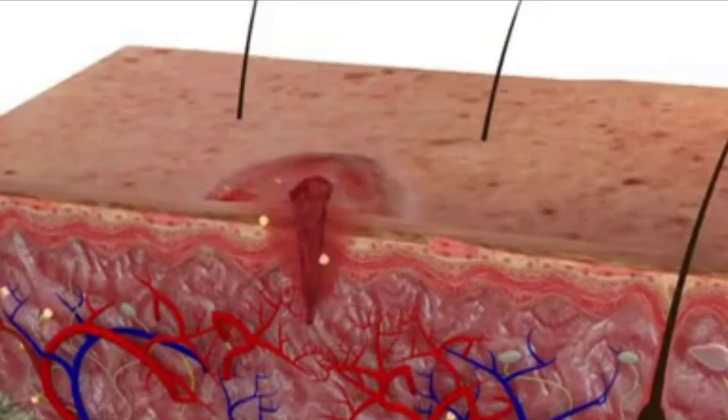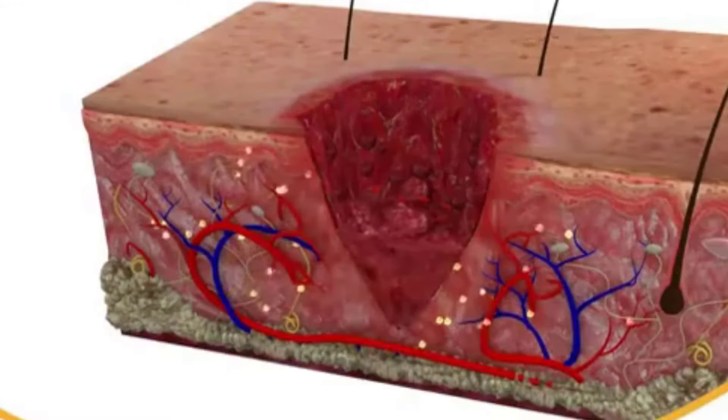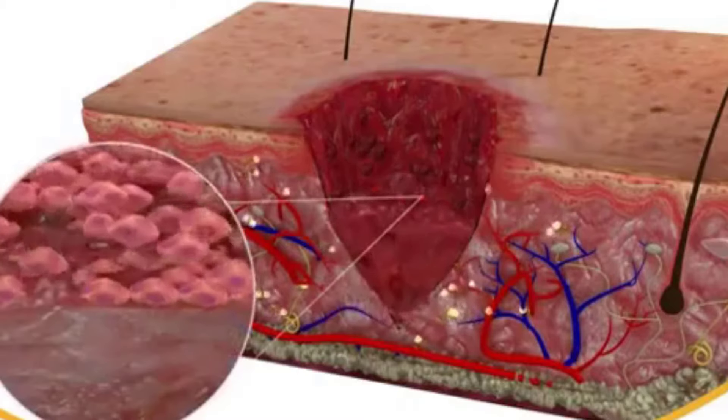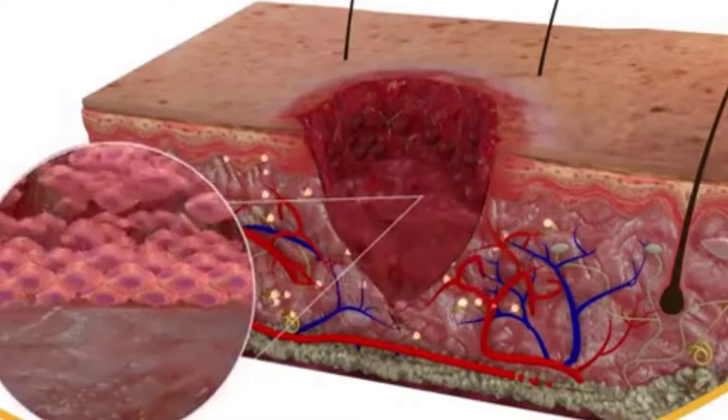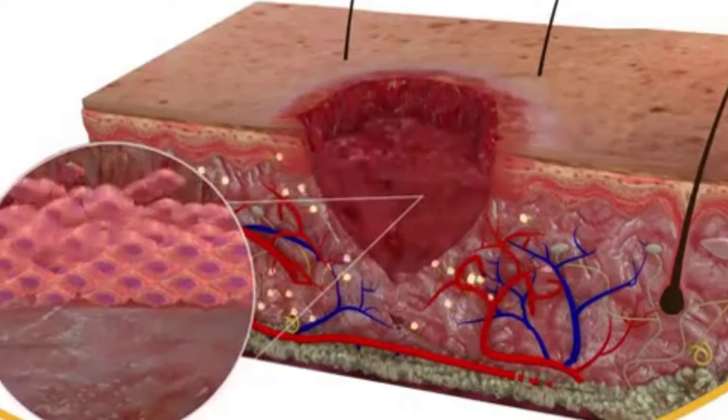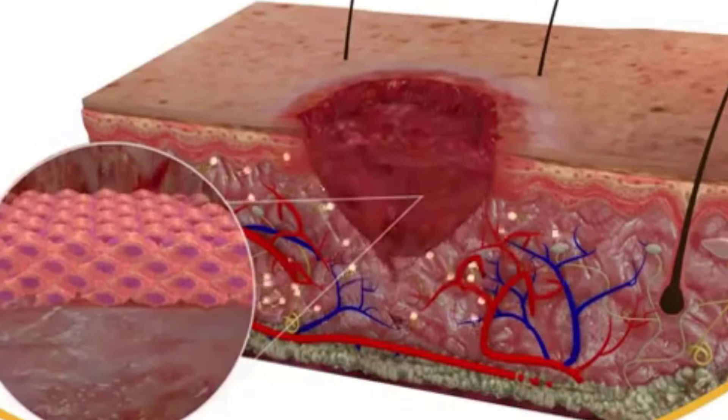A primary union describes the healing of a wound where the edges are close together. When there is gapping in a wound, it takes longer to refill the area with cells and collagen. The process, called secondary union, occurs as the edges of the wound are pulled together by wound contraction.